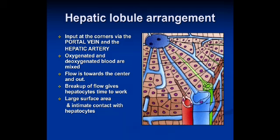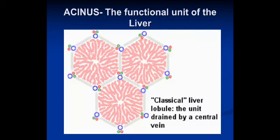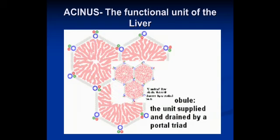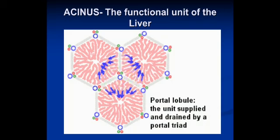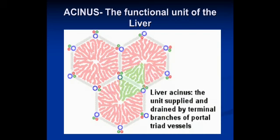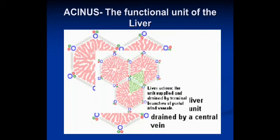In the hepatic lobule arrangement, blood input comes at the corners via the portal vein and hepatic artery. Oxygenated and deoxygenated blood are mixed, and flow is towards the center. This break in flow gives hepatocytes time to work. The portal triad is made up of a branch of the portal vein, hepatic artery, and tributary of the bile duct. The functional unit is also called the acinus, where the green bile flows towards the portal triad.